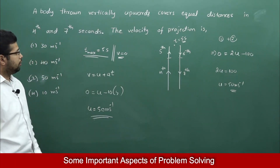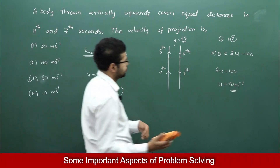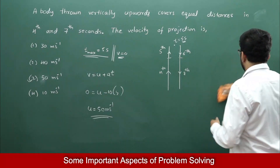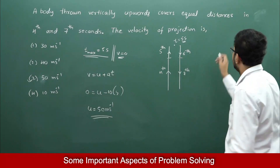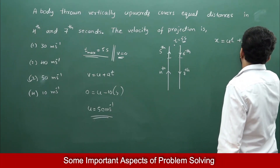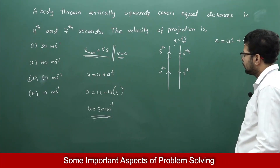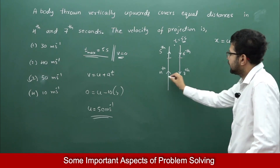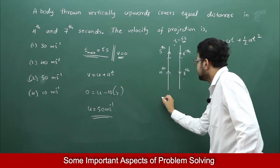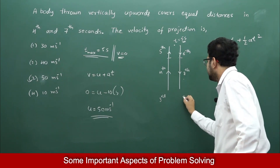One more approach: we can also use X = UT + ½aT². If the distance in the 4th second equals the distance in the 7th second, then the distance in the 3rd second equals the distance in the 8th second.